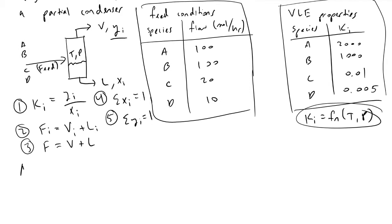To begin the actual hand calculation, keeping these tables, we'll first analyze species A. From this table, k_a is 2.0, which equals y_a over x_a. Therefore, y_a equals 2.0 times x_a. Next, we look at the component mole balance of species A: F_a = V_a + L_a. From table one, species A has a molar flow rate of 100 mole per hour.